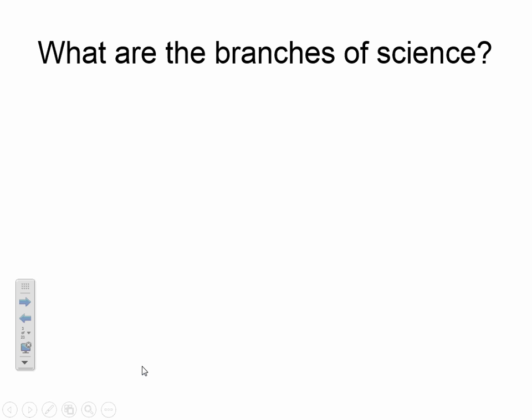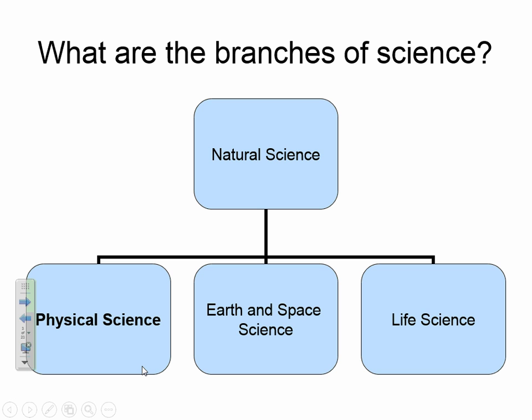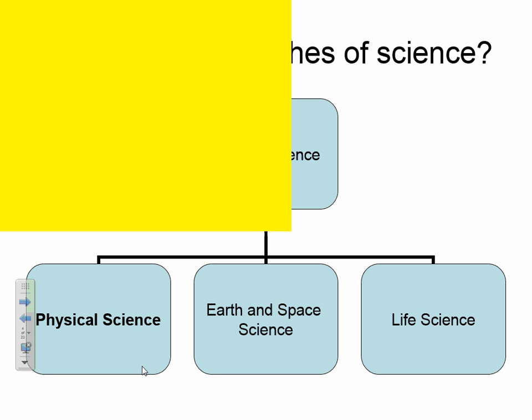Now, obviously, branches of science. There are three branches for natural science: life science, earth science, and physical science. You had life science in 7th grade, you had earth and space in 8th grade, and now in 9th grade you're having physical science. What is physical science? It's a blend of physics and chemistry — you are studying matter and how it interacts with one another.